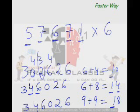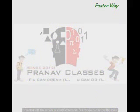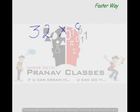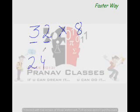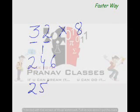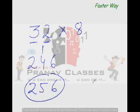Let's take a smaller number: what is 32 times 8? From left to right: 3×8 is 24, and 2×8 is 16. Write 1 then 6 for the second product; 24+1 is 25. So the answer is 256. It works perfectly.